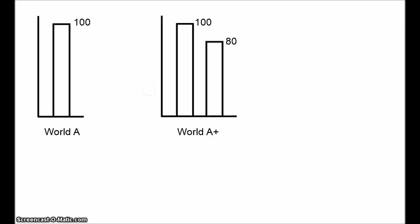Second, there's world A+. A+ is exactly the same as A, except there's an additional group of one million people living slightly worse lives. Still very good lives, just worse than the absolutely fantastic lives of the first group. Their lives are of value 80, so the average for this world is 90.